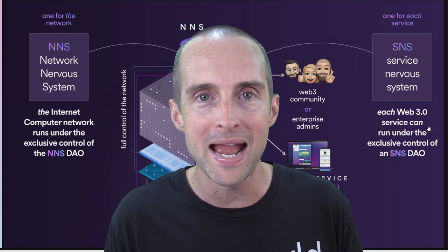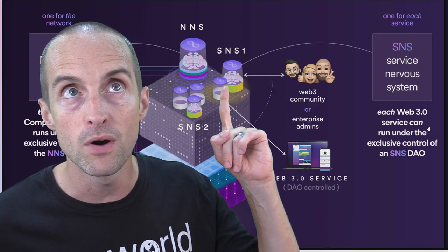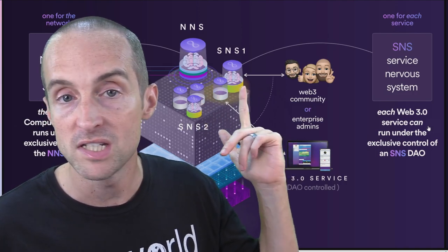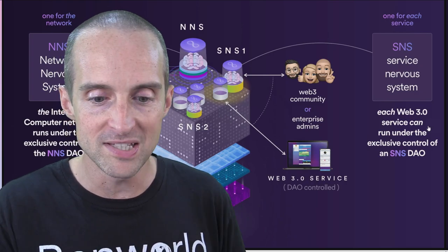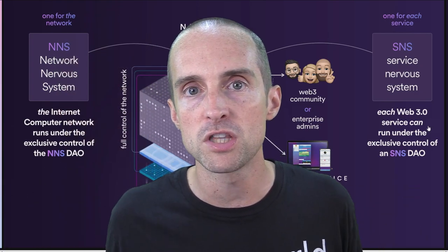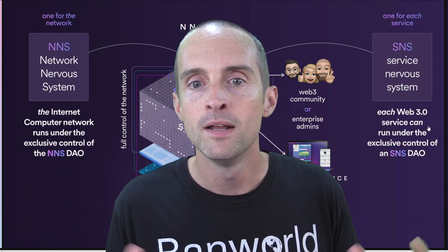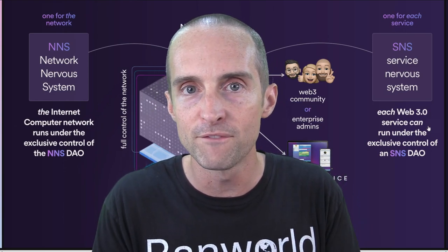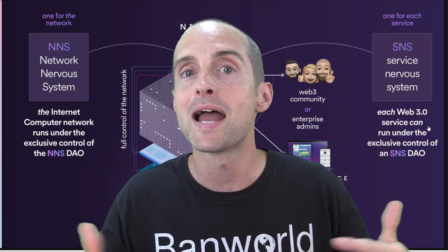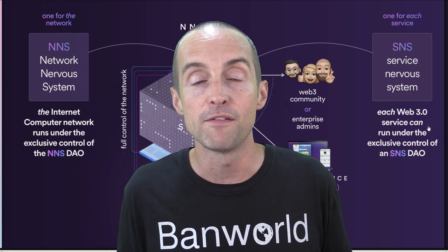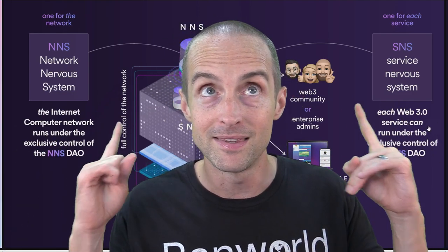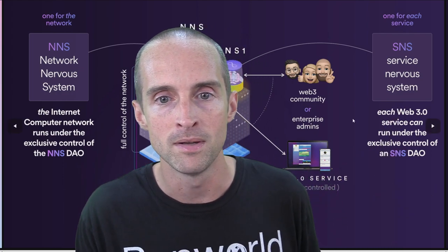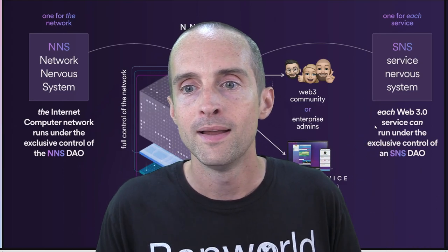The Service Nervous System is one of the massive value propositions of Internet Computer. When you picture enterprises, companies, games, tokens, DeFi apps all launching their own SNS tokens and decentralized exchanges, the more people launch, the more developers pay attention, the more communities will migrate over to Internet Computer. If a game like Gods Unchained moved its entire infrastructure to ICP, that could be a massive boost for the game, the token, and a fresh infusion of new players — and this is where Internet Computer really blows up.